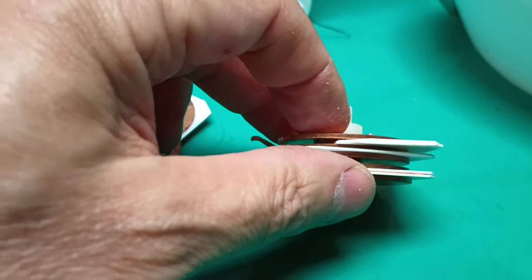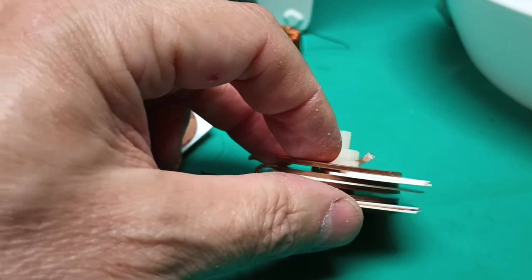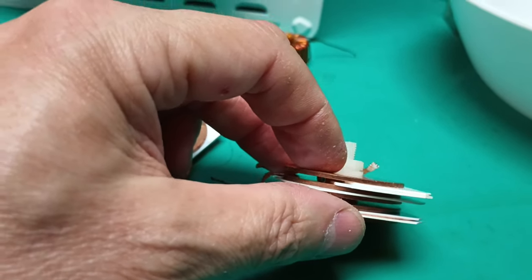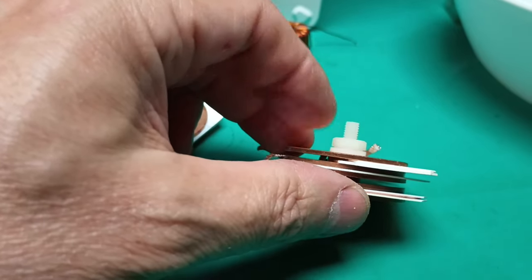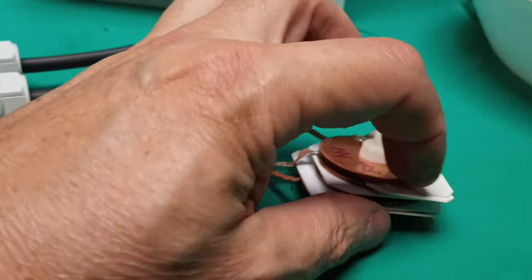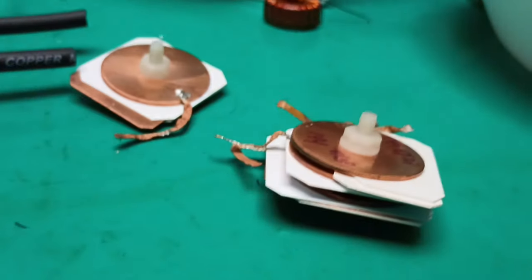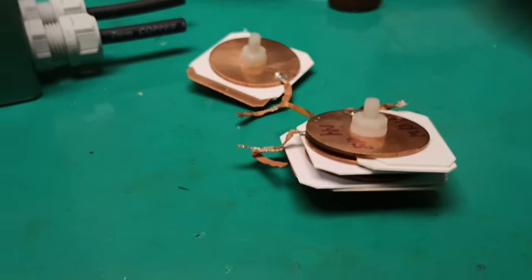These disks will be slightly concave because of the way they're stamped, so they have to be put in the right order: concave, convex, concave, convex, to make the most contact with the dielectric. Otherwise the capacitance will be low. But any sharp points on that copper will go right through that soft plastic.